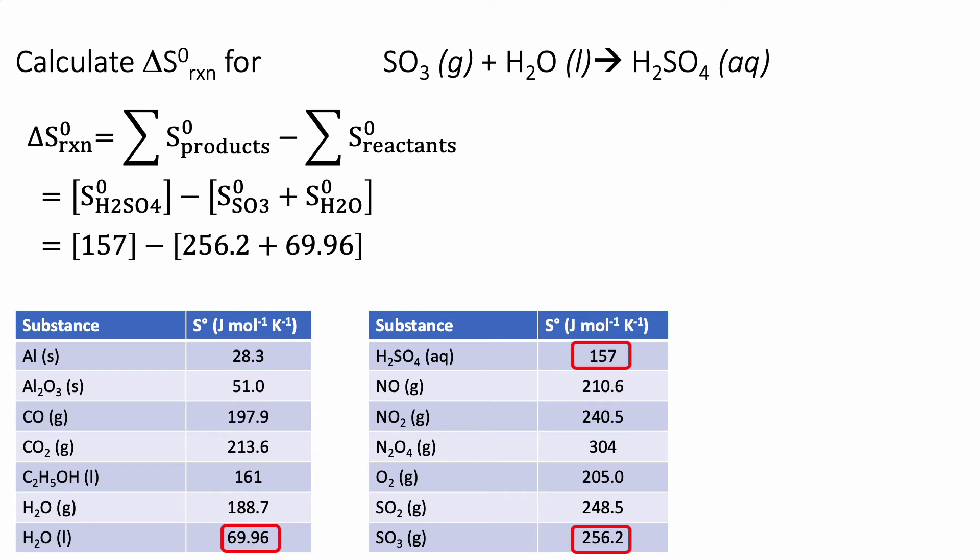So now we can go ahead and plug those into our equation and run that through our calculator, and we get negative 169.16 joules per mole kelvin. It is very useful to be able to look at a reaction and to just sort of eyeball whether the entropy will go up or down.